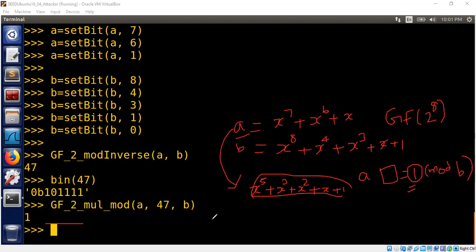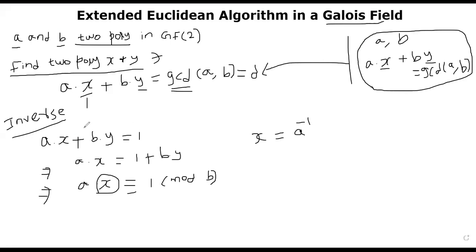So to summarize very quickly, all we did is apply the extended Euclidean algorithm to find X and Y polynomial. And then we know that A and B are relatively prime. Otherwise, A inverse doesn't exist.